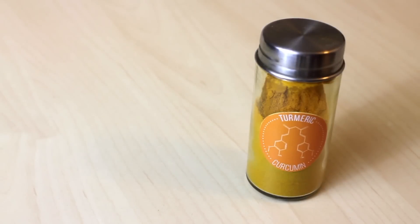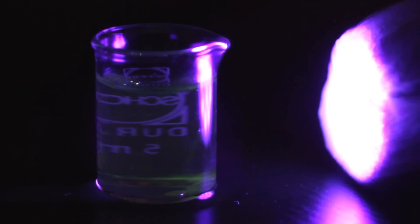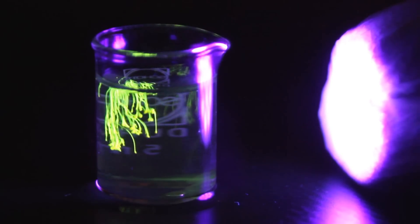For the first experiment, you only need three things. Turmeric, alcohol, such as vodka, and a UV torch. The alcohol is placed in a container which is then illuminated with the UV torch while turmeric is sprinkled in. The result is this incredible yellow fluorescence.